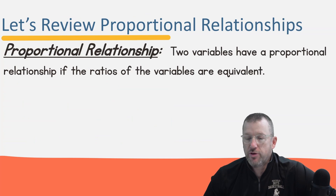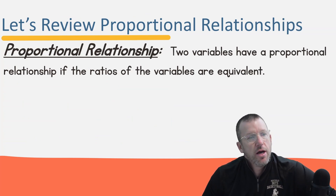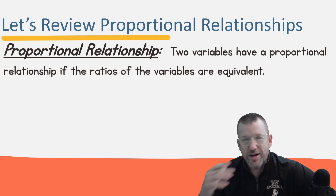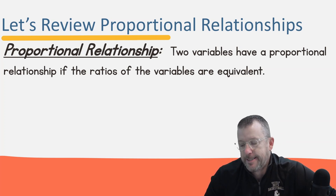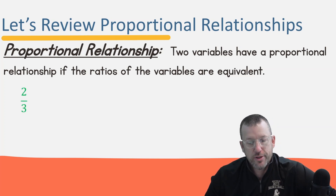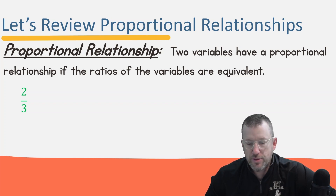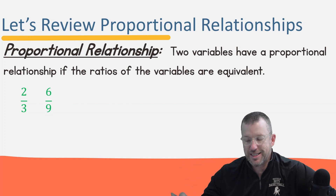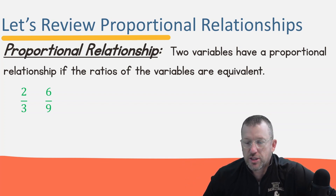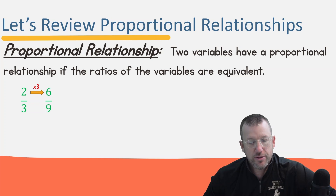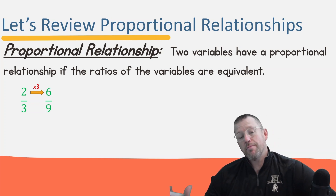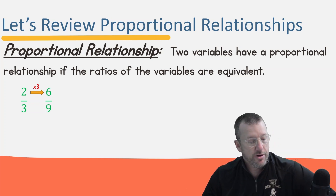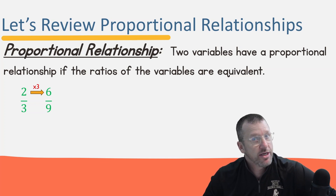Let's review proportional relationships. Two variables have a proportional relationship if the ratios of the variables are equivalent. Here's a ratio — let's say apples to oranges. I have two apples to every three oranges. If it's proportional, it has to scale up at the same rate. One way to figure out if ratios are proportional is they need to be equivalent fractions.